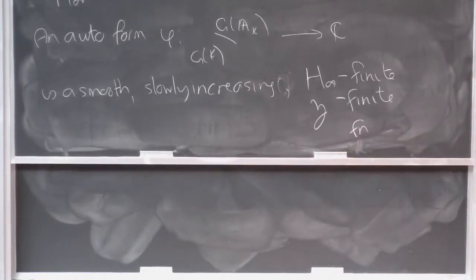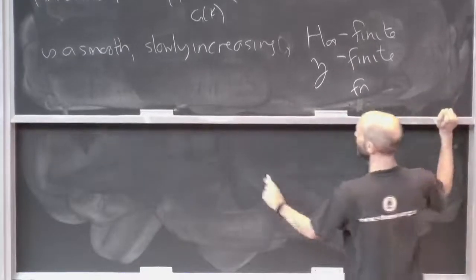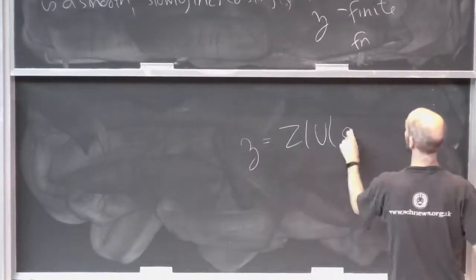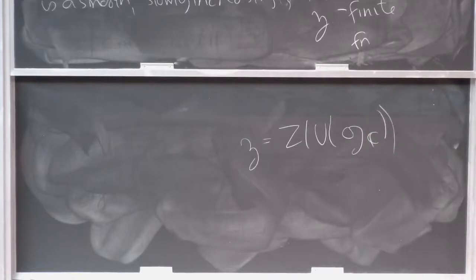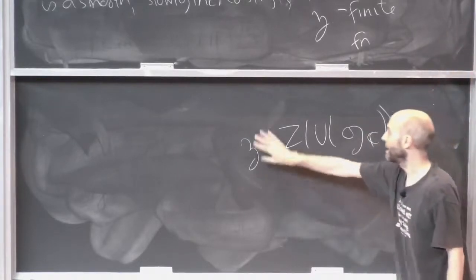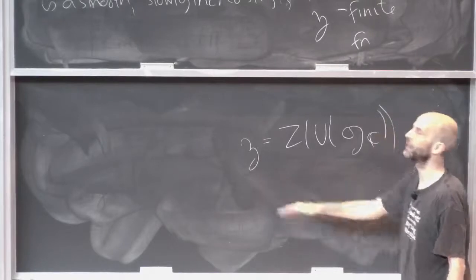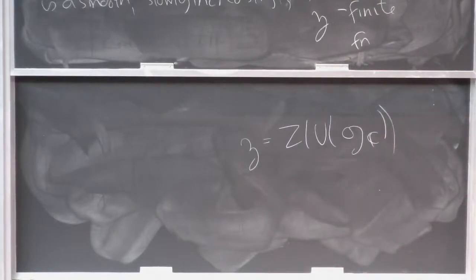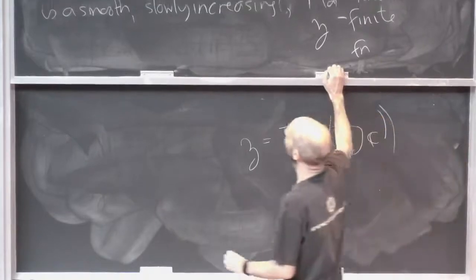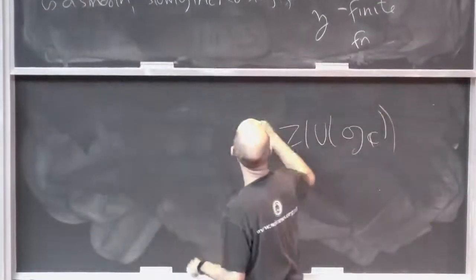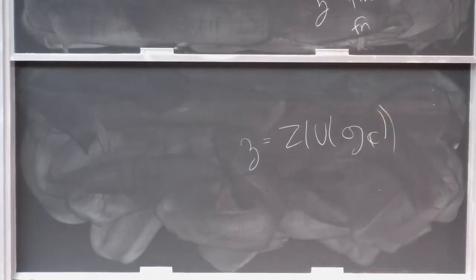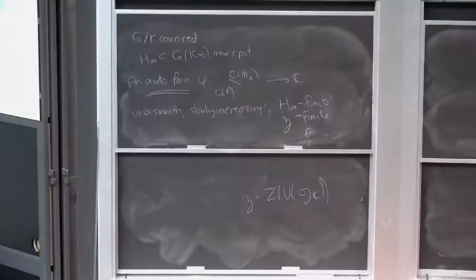Z-finite: Z is the centre of the universally enveloping algebra of the Lie algebra. Z-finite means you take that typically infinite-dimensional algebra of differential operators, hit φ with that entire algebra, and only hit it with a finite-dimensional vector space. The reason is there's some finite co-dimensional ideal which is annihilating φ. So there's an automorphic form. We've worked hard to get to that definition, but I'm rather hoping that the way I've presented it will stick in your head better than had I just written it down in lecture two.